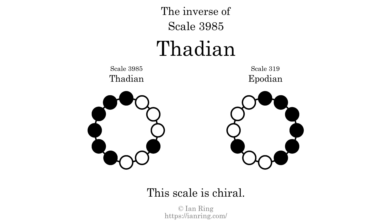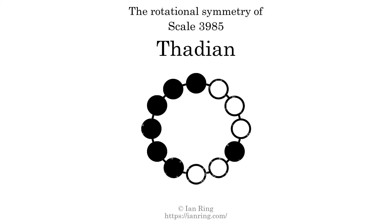The inverse of a scale is a mirror image — it is what you get when the sequence of intervals is reversed. The inverse of this scale is scale 319, also known as Apodian. This scale is chiral; it cannot transform into its inverse by rotational transformation. This scale has no rotational symmetry. For even more detail about this scale, visit ianring.com/musictheory/scales/3985.